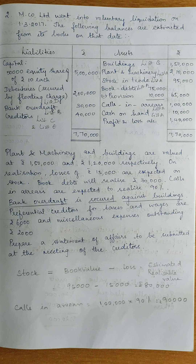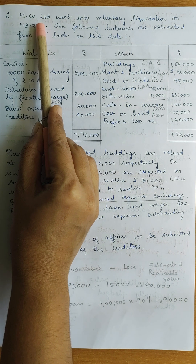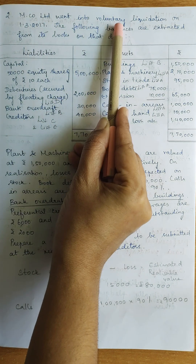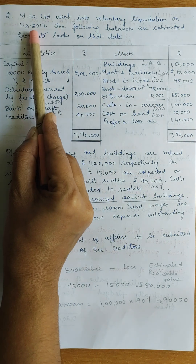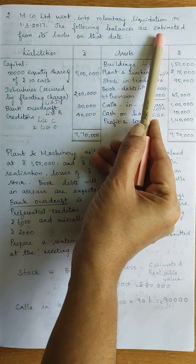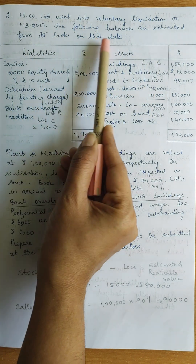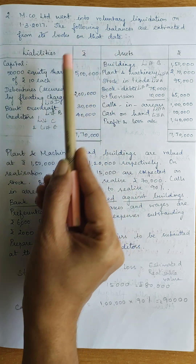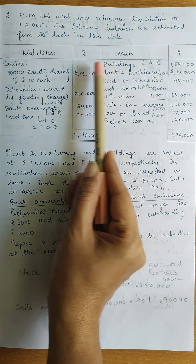Question: M Company Ltd went into voluntary liquidation on 1-3-2017. The following balances are extracted from its books on that date. Balance sheet liabilities and assets.